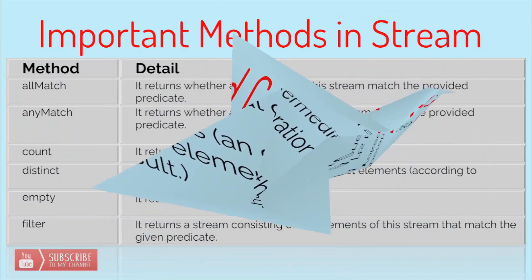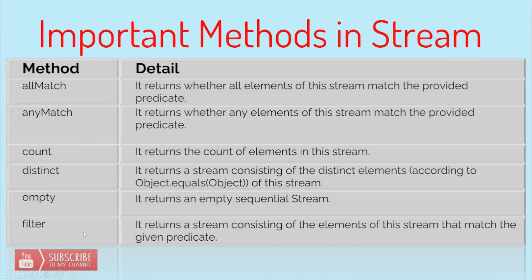The first important method is allMatch — it returns whether all elements of the stream match the provided predicate. Second is anyMatch, which is similar but returns true when any element matches the predicate. Then we have count, which counts the number of elements in the stream and returns that as a long. Next is distinct, which returns a stream consisting of distinct elements only, doing comparison using Object.equals — if an object cannot be compared this way, it will result in an exception.